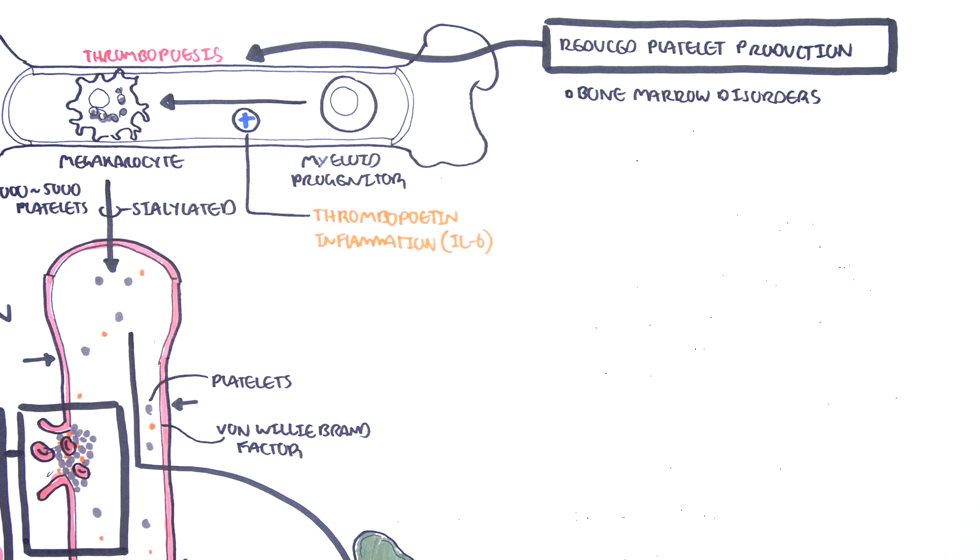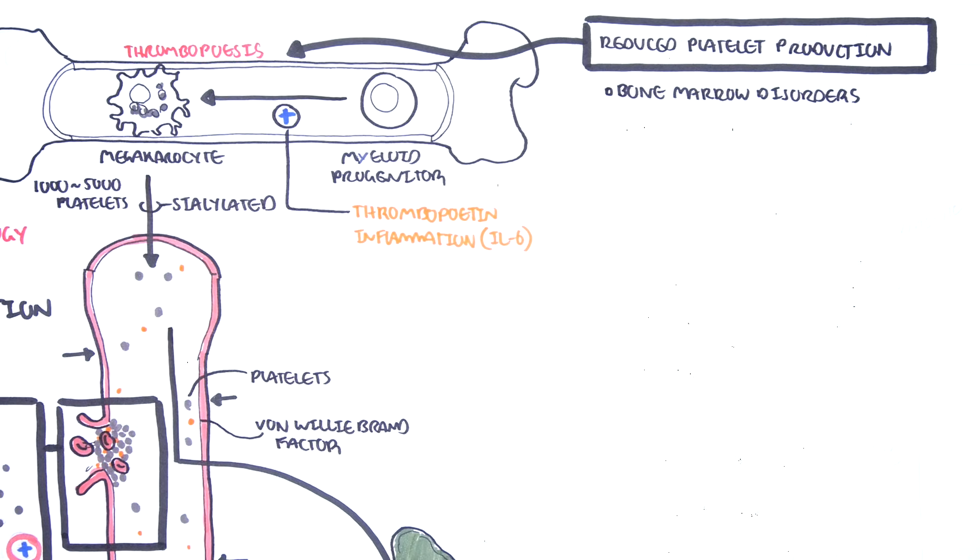Malignancy through bone marrow infiltration. Alcohol can actually directly induce bone marrow toxicity, reducing production of megakaryocytes and hence platelets. All of these causes essentially will lead to disruption in thrombopoiesis.